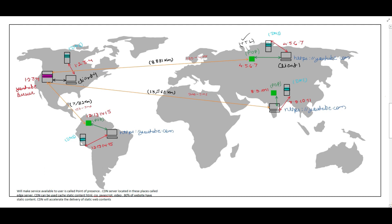Looking at the performance improvement: when the client from Russia queries the CDN, earlier it was taking 190 milliseconds — now it drops to 4 milliseconds. For India, it was taking around 240 milliseconds — now it drops to 5 milliseconds. For Brazil, it was taking 150 milliseconds — now it comes down to 3 milliseconds. You can see the performance improvement is around 80 to 90 percent when using the CDN. That's why we use CDN for caching static content — it accelerates the delivery of web content.